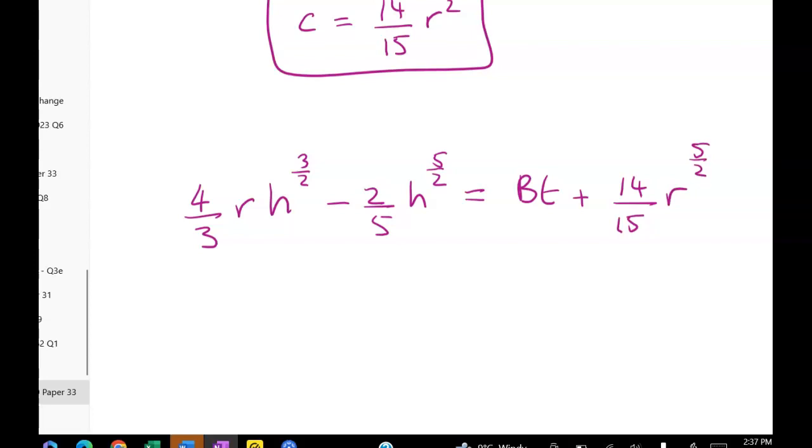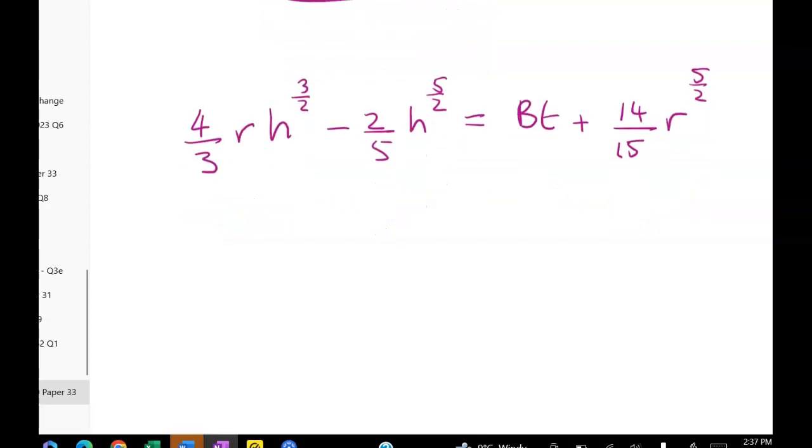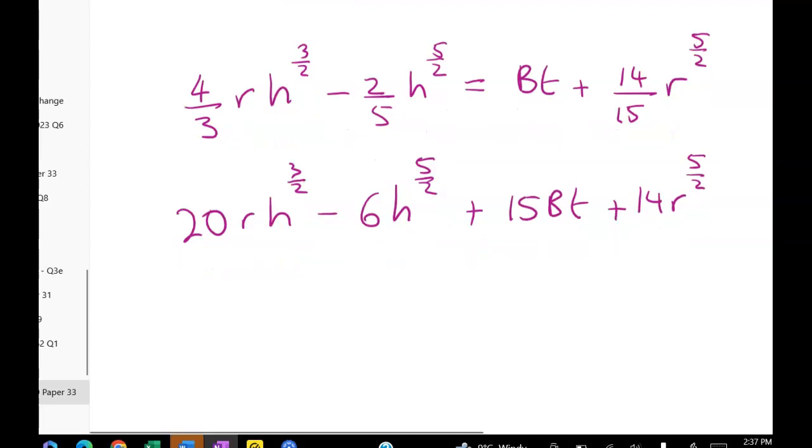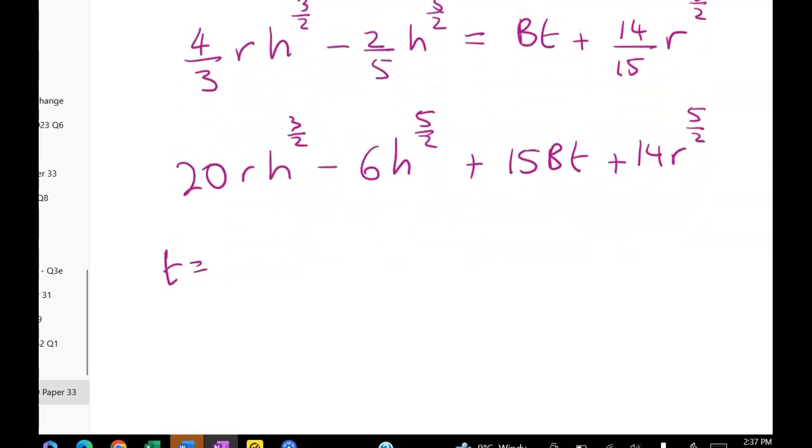Now I don't like all of the fractionally divided through stuff. So I'm going to times through by 15 straight away. That's going to give me 20 R times H to the three over two minus six H to the five over two plus 15 BT plus 14 R to the five over two. And at T equals 14. We're going to get H is equal to zero. So zero minus zero. That should be an equal sign here. Is equal to, what have I got now? 15 times 14 B plus 14 R to the five over two.